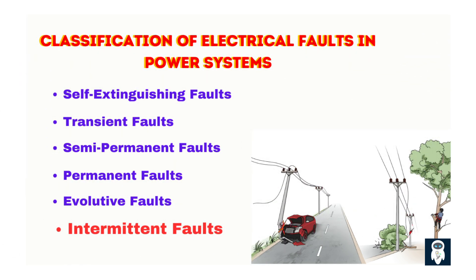Intermittent faults occur repeatedly over time, often due to environmental or mechanical conditions, and are temporary but can cause recurring disruptions. They are periodic in nature, triggered by specific environmental conditions, and may require system monitoring to identify root causes. Examples include swaying overhead lines contacting tree branches during windy conditions, and loose connections from vibrating equipment causing temporary faults under certain load conditions. These faults are difficult to diagnose, and preventive measures such as vegetation management or line tightening are often necessary.